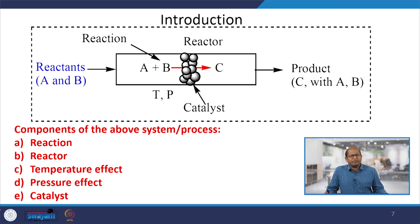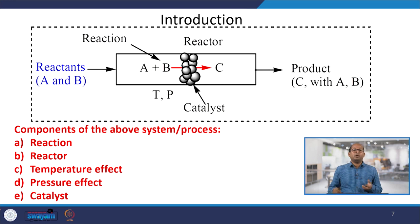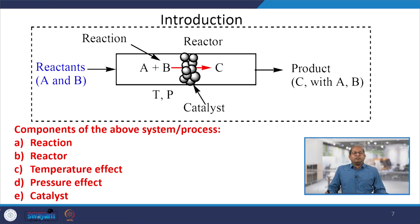Then we have to separate components A and B from the product so we can get the desired, highly pure product. If there is any side product or byproduct, that also has to be separated out from the system. In this case, the general components of a reaction system are: reactants, reaction (A + B → C), reactor, temperature effect, pressure effect, and catalyst.